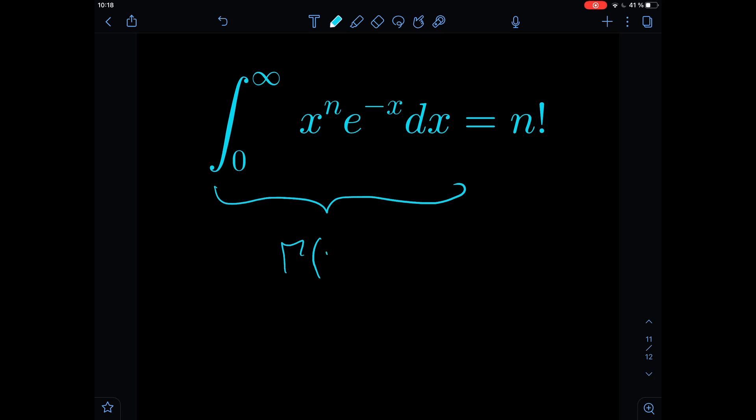is equal to n factorial. So this is the gamma function of n plus 1, which is a peculiar thing because we have the exponent n in the integrand but we have n plus 1 in the gamma function.